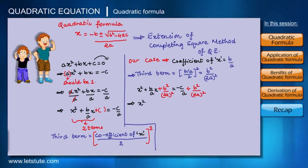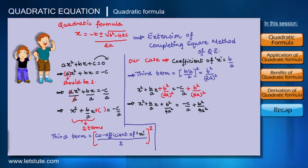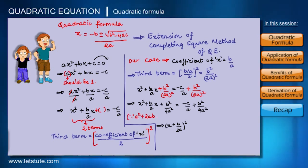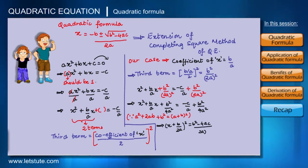We add this term to both sides to balance the equation. Our equation becomes X² plus (B/A)X plus B²/(4A²) equals minus C/A plus B²/(4A²). The left-hand side becomes (X plus B/(2A))², using the identity A² plus 2AB plus B² equals (A plus B)². The right-hand side simplifies to (B² minus 4AC) upon (4A²), which is (B² minus 4AC)/(2A) whole squared.